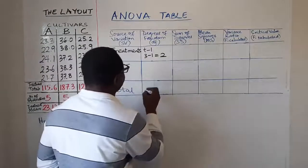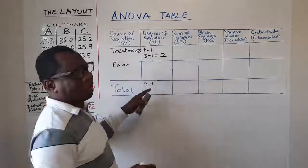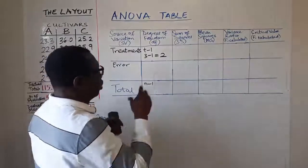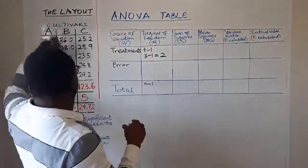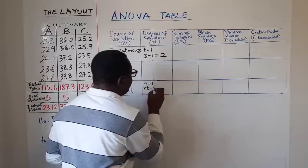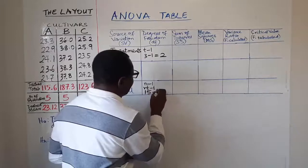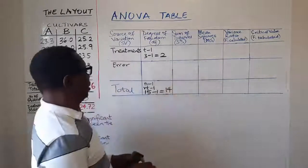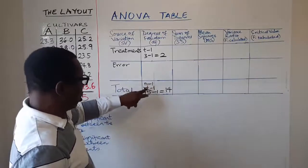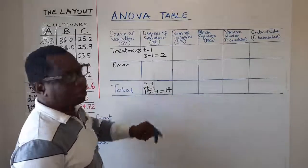Now for total it is simply N minus 1. And what is N? N is the total number of observations in the data which we call RT here because we have the same number of observations for each treatment. So it's the same thing as RT minus 1. And that is 15 minus 1 which is equal to 14. So the degrees of freedom N minus 1 or RT minus 1 they mean the same thing. That's 15 minus 1 in this example giving us 14.